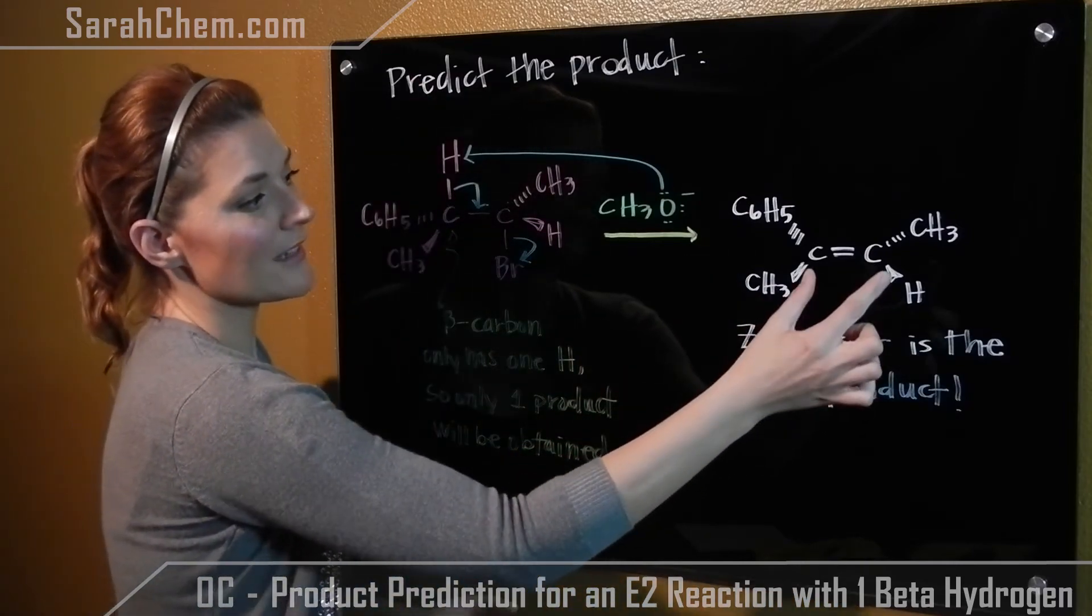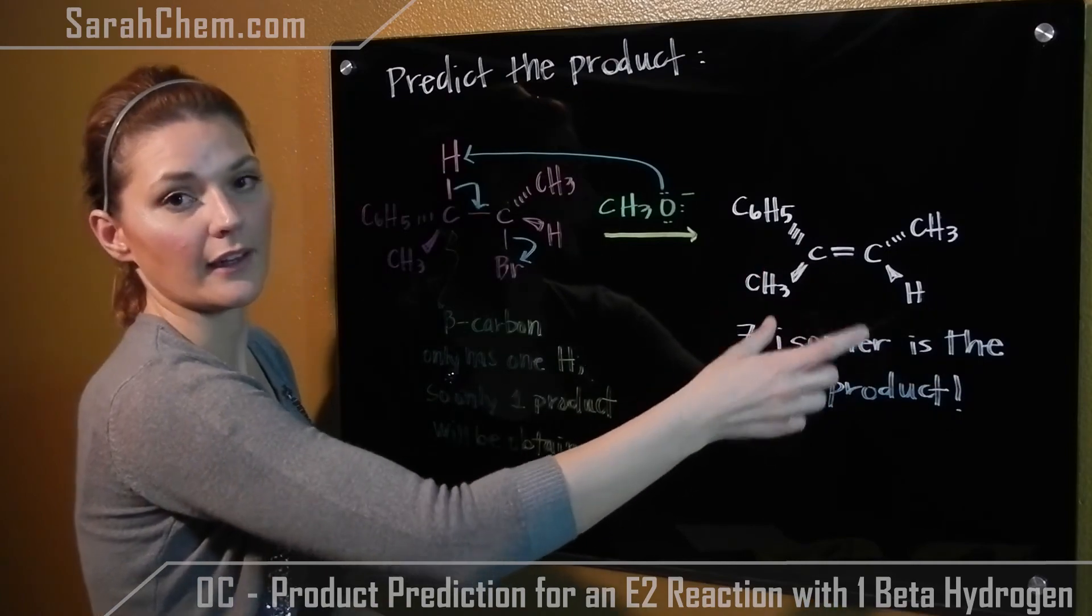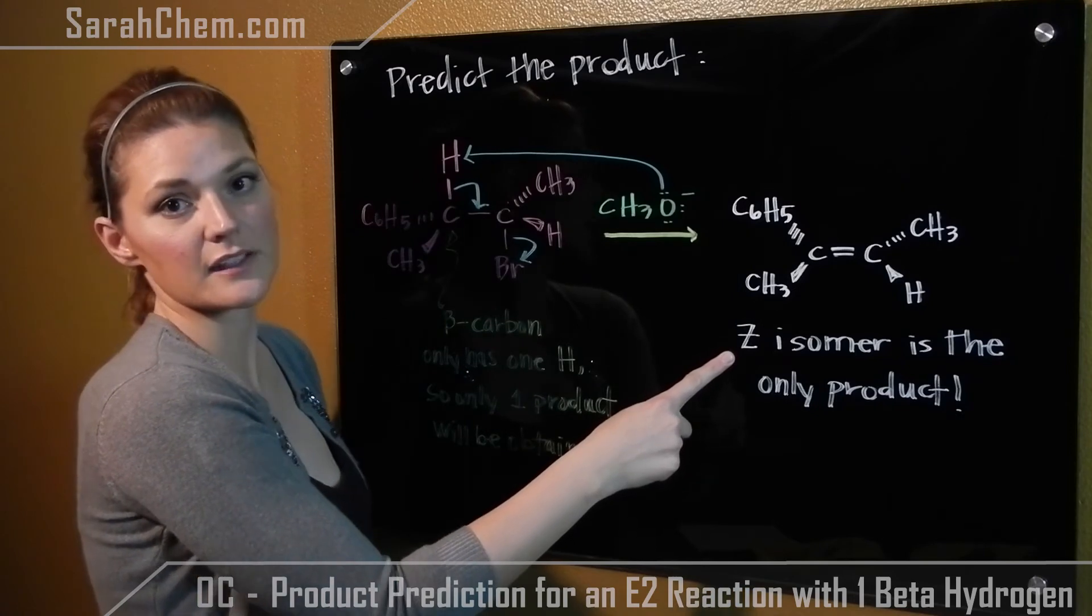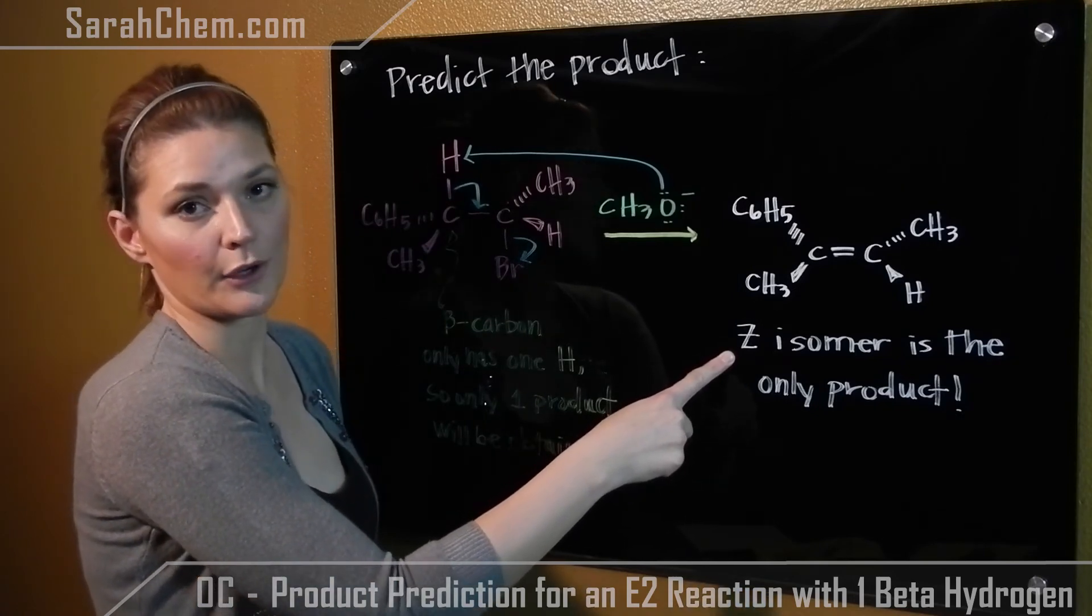So when we get this product, this is the only product that can come out because the configuration is set. In this case, we will get a Z isomer. There will be no E isomer coming out.